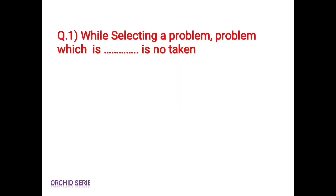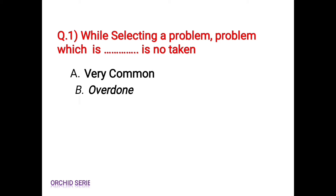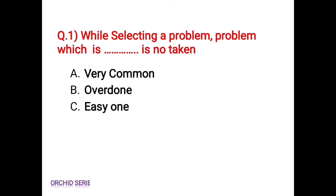The first question is: while selecting a problem, which type of problem is not taken? Option A: very common. Option B: overdone. Option C: easy one. Option D: rare. The correct answer is option B, overdone.